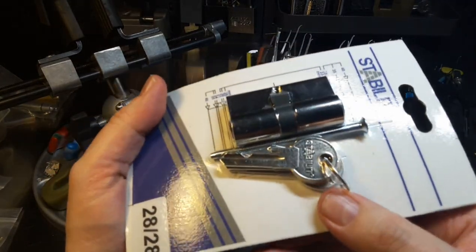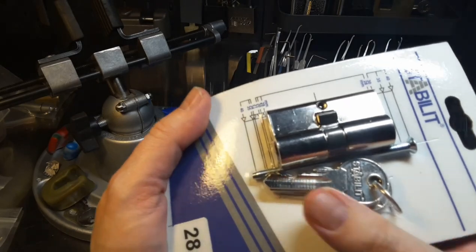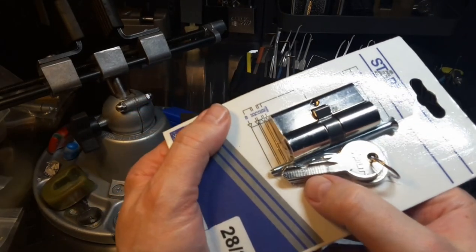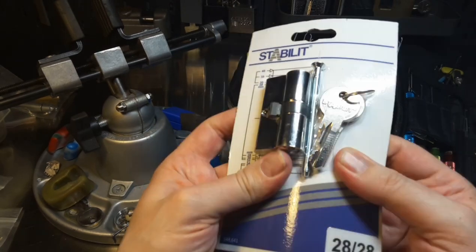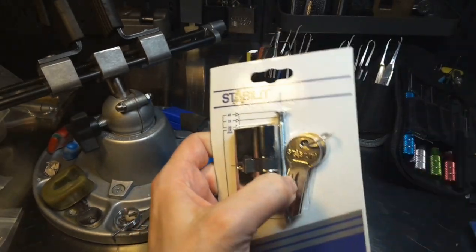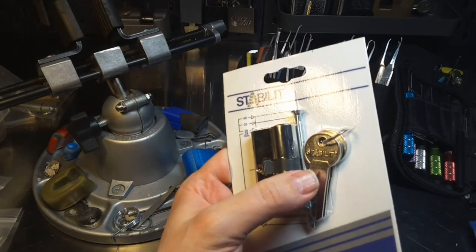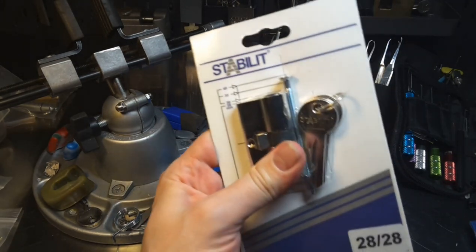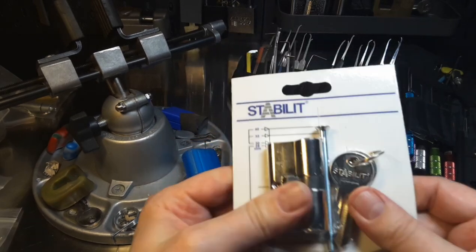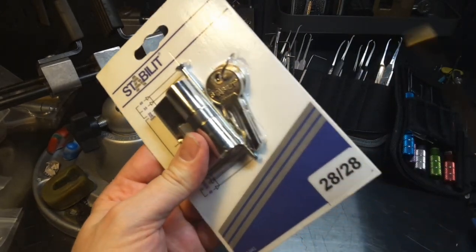As you can see, it's a 5-pin Eurocylinder. At least it has nice bitting. This was the lock with the best bitting, the most challenging bitting. It's nice to buy a lock online so you can see the bitting.